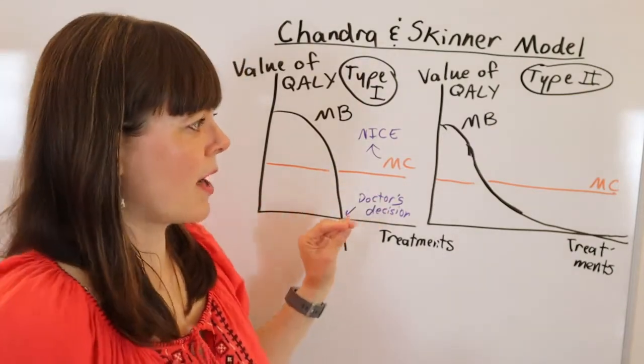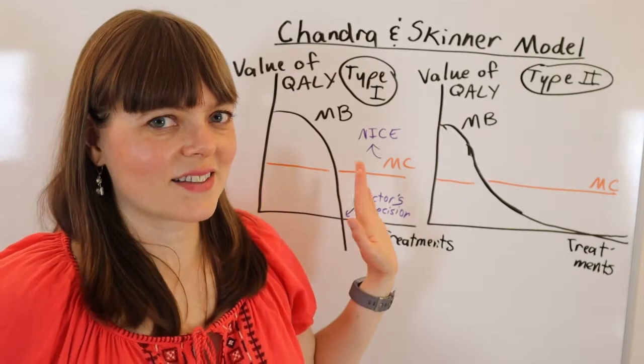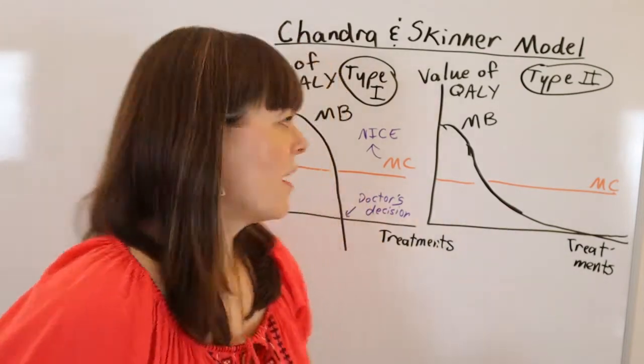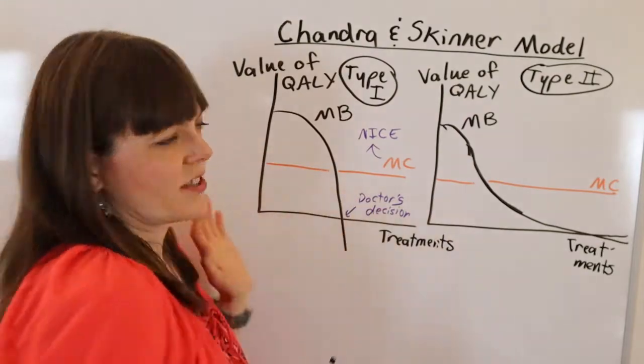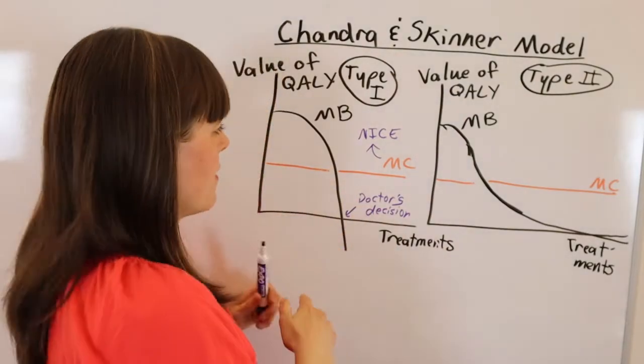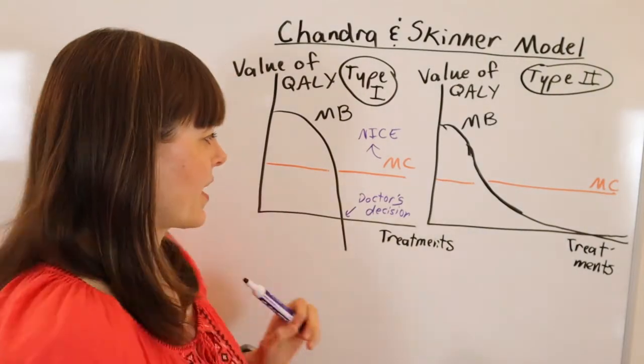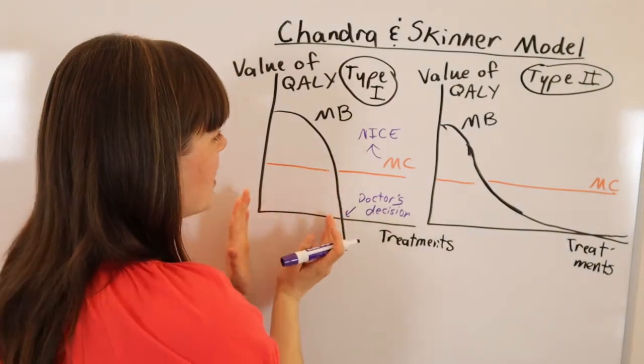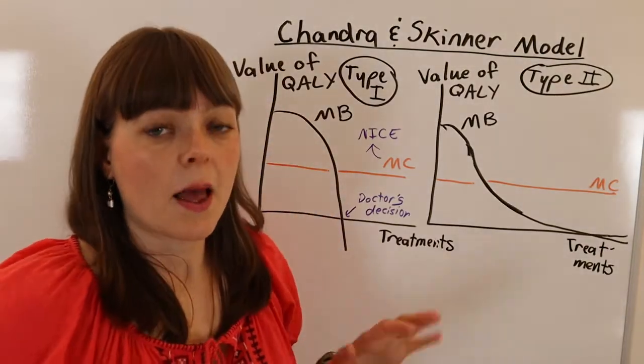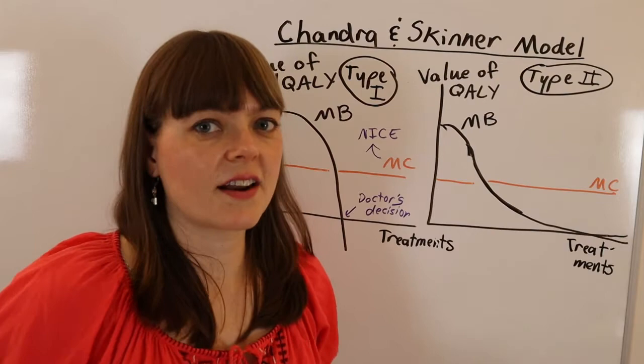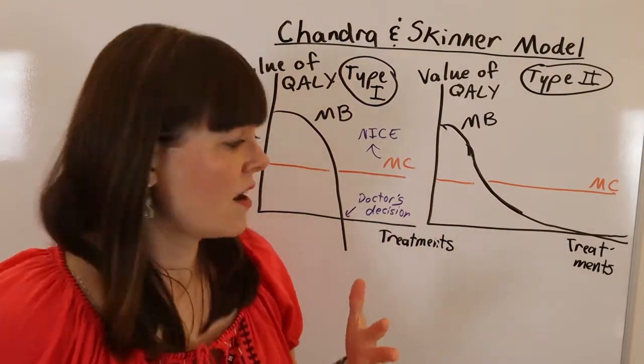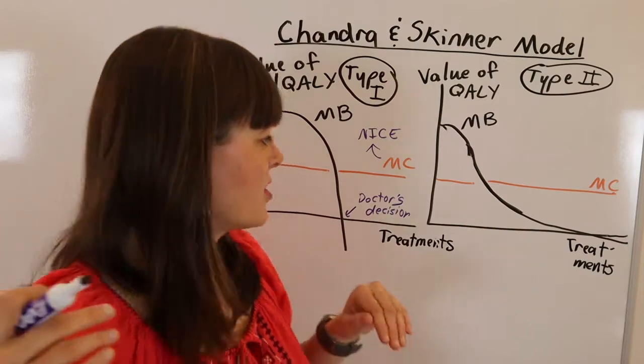Now I want to think a little bit about the incentives to innovate. So there's some ironic things here. The example in the Chandra and Skinner paper of type one technologies or one of the examples they gave was HIV drugs, HIV medications. So people who have HIV have a very high value for taking those medications, but those medications have side effects. So people who don't have the illness yet, for those people, it's not worth the side effects of the medication.